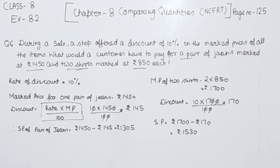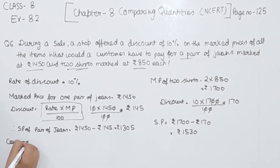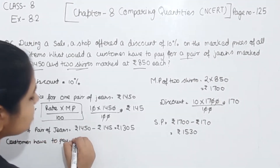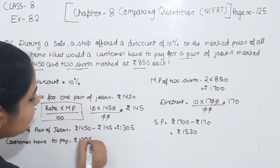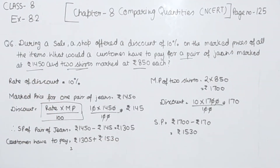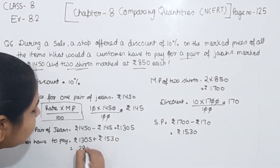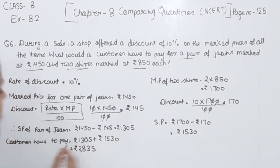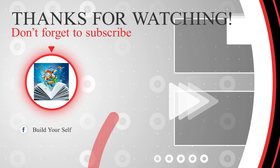Now we find the total amount the customer has to pay. For the jeans: ₹1305, plus for the 2 shirts: ₹1530. Adding these together gives ₹2835. This is the total amount the customer has to pay. This completes question number 6. In the next video, we will start with question number 7.